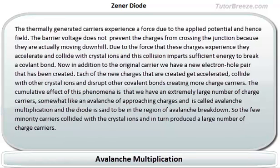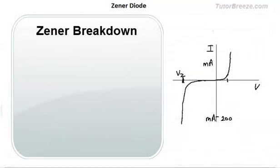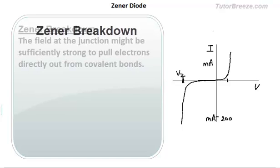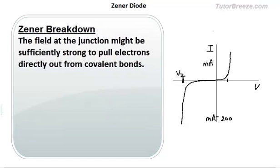There is another mechanism by which charges can be produced and that is called Zener breakdown. In case of Zener breakdown, the field at the junction, the electric field which is present at the junction across the junction might be sufficiently strong to pull electrons directly out.